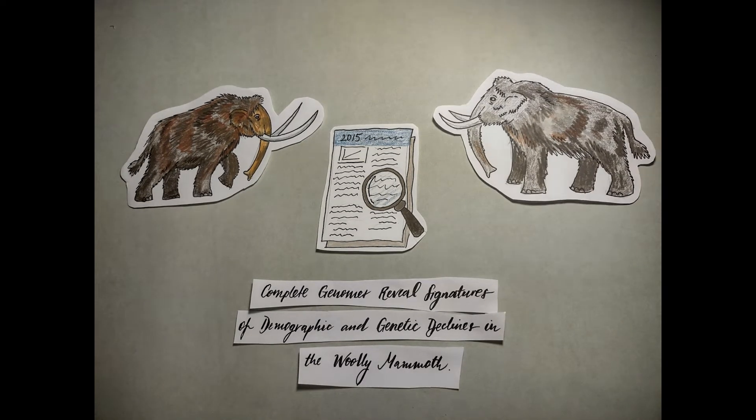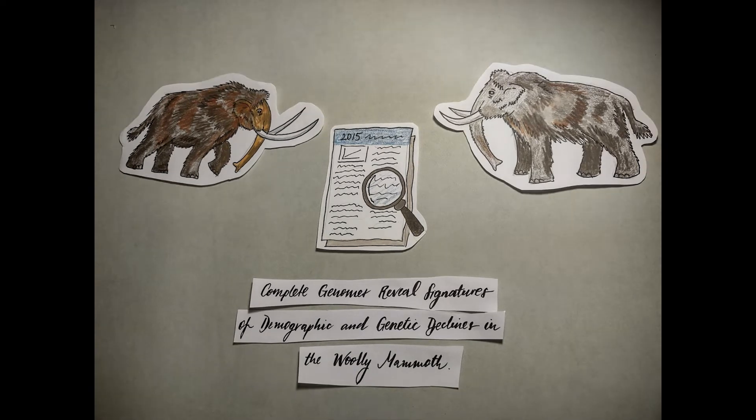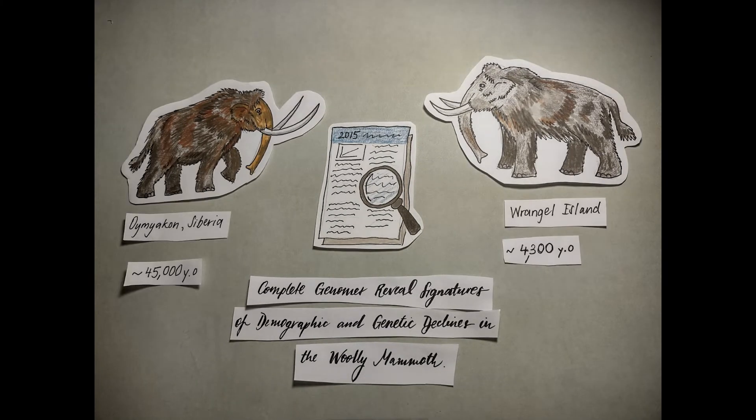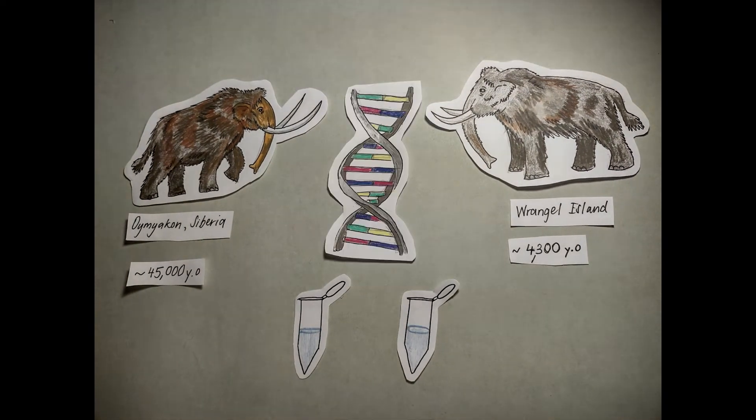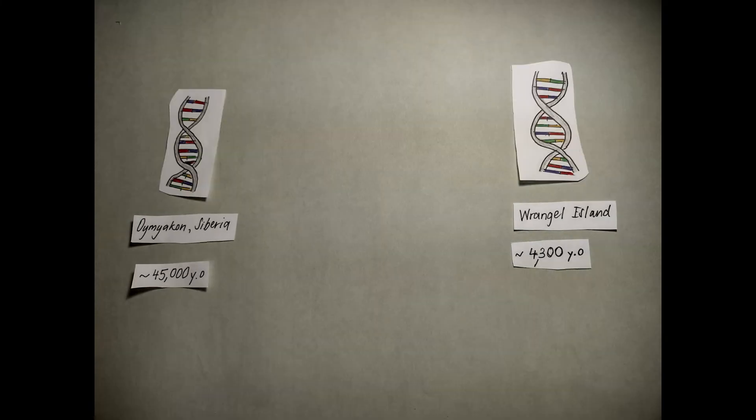The other individual is much older, nearly 45,000 years old and lived near Oymykon in northeastern Siberia. The remains of the two mammoths had DNA extracted and the genomes sequenced. What did the scientists conclude from the two genomes?